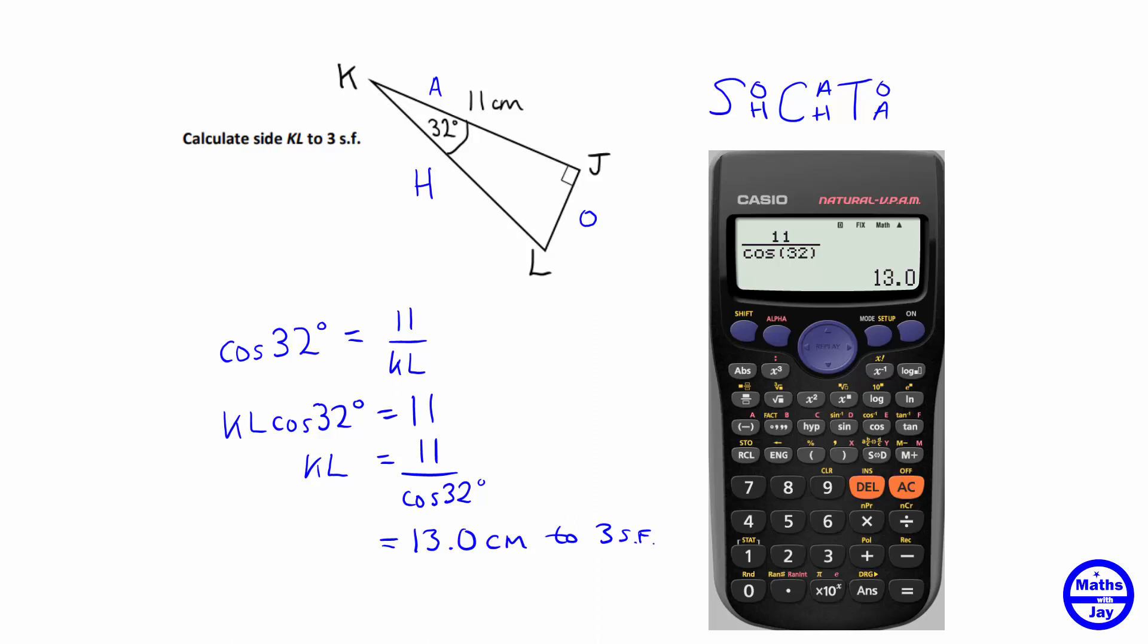And then we would check that the answer is sensible, and we know we're finding the hypotenuse, so the longest side in the triangle, and this has turned out to be bigger than the other side that we know so thirteen is bigger than eleven, so it looks reasonable.